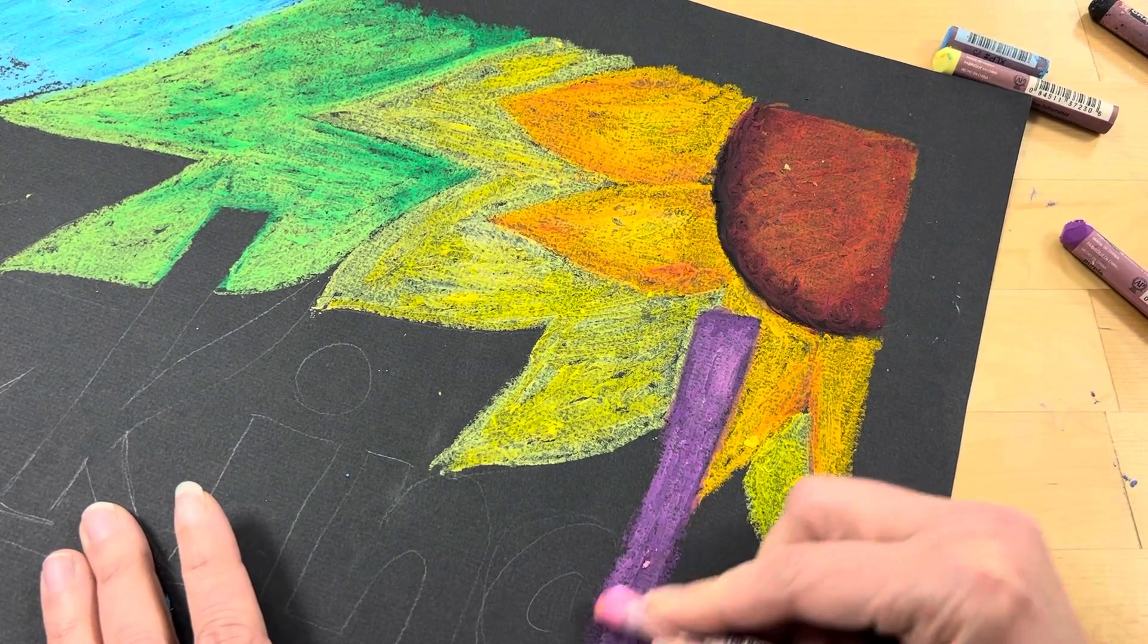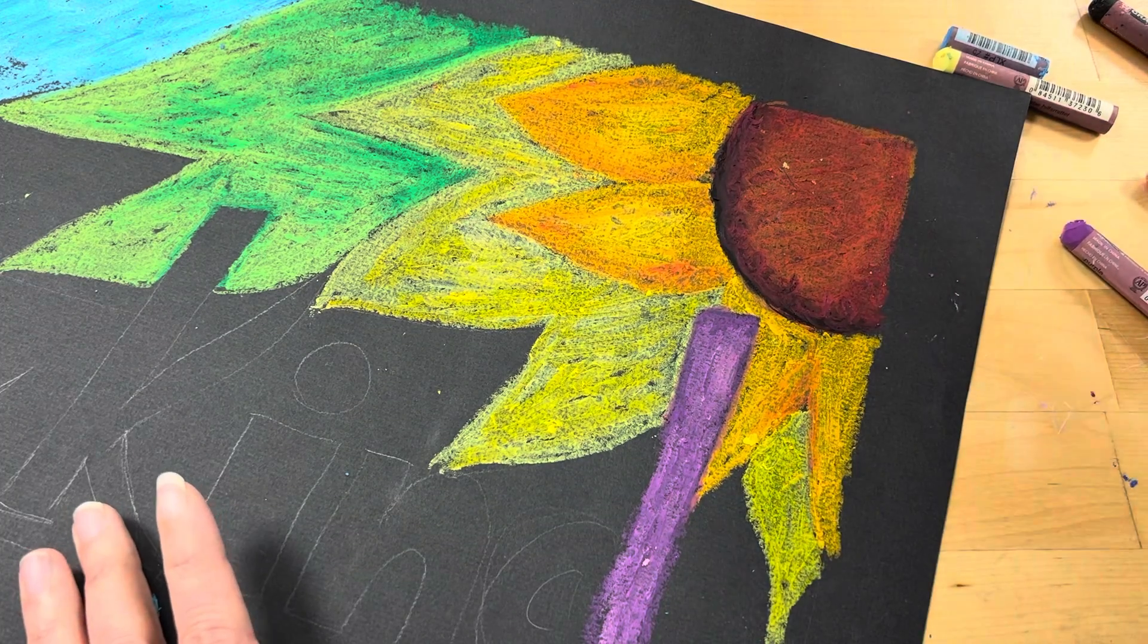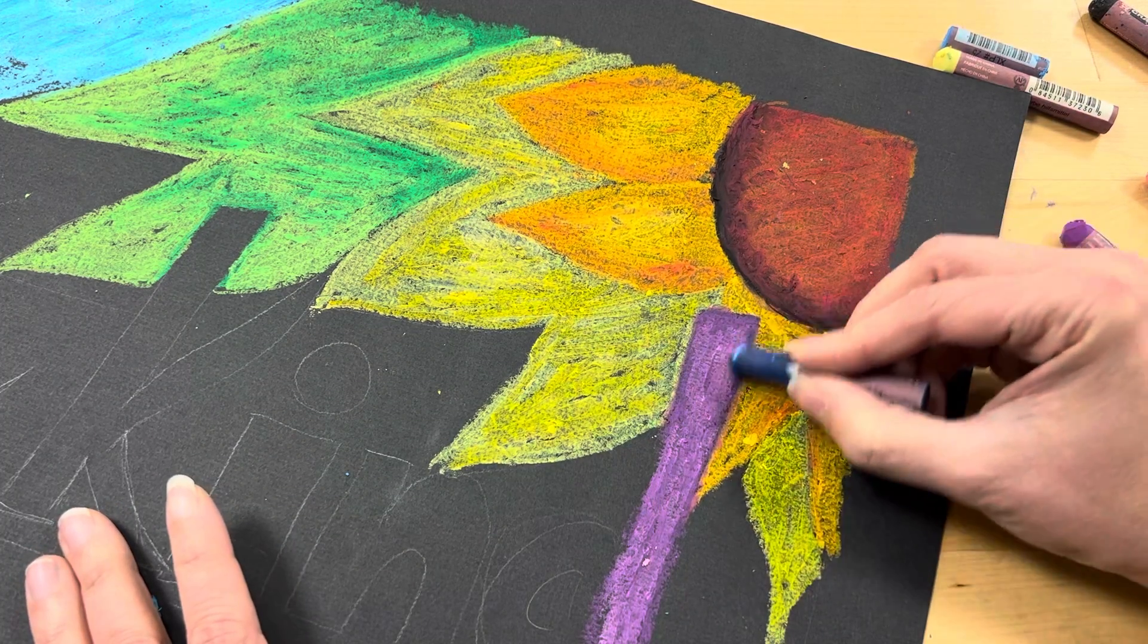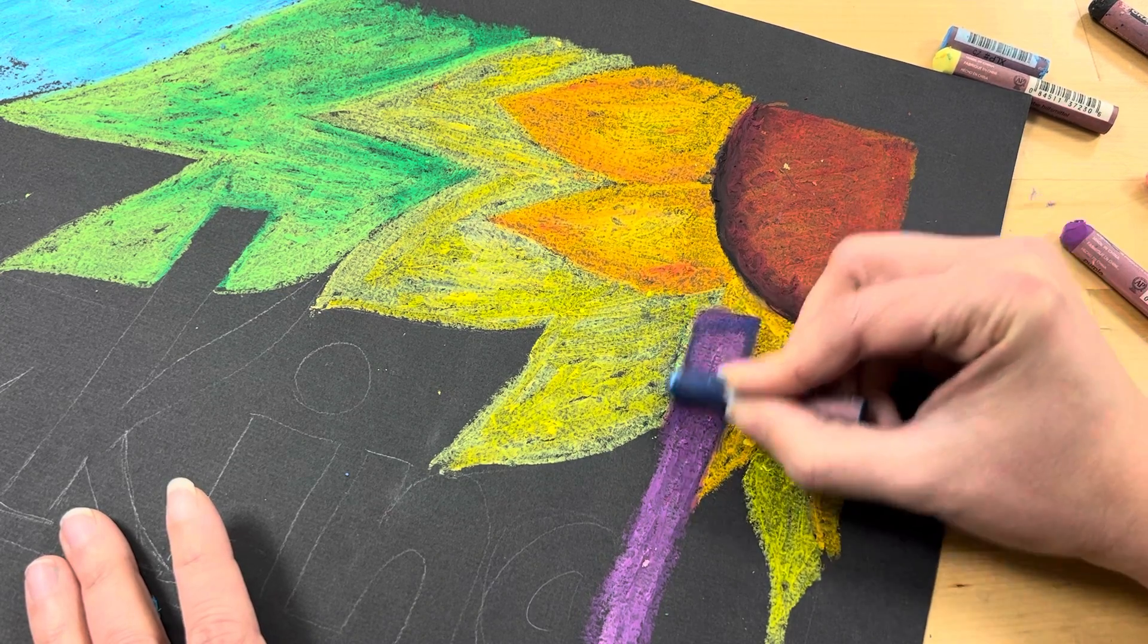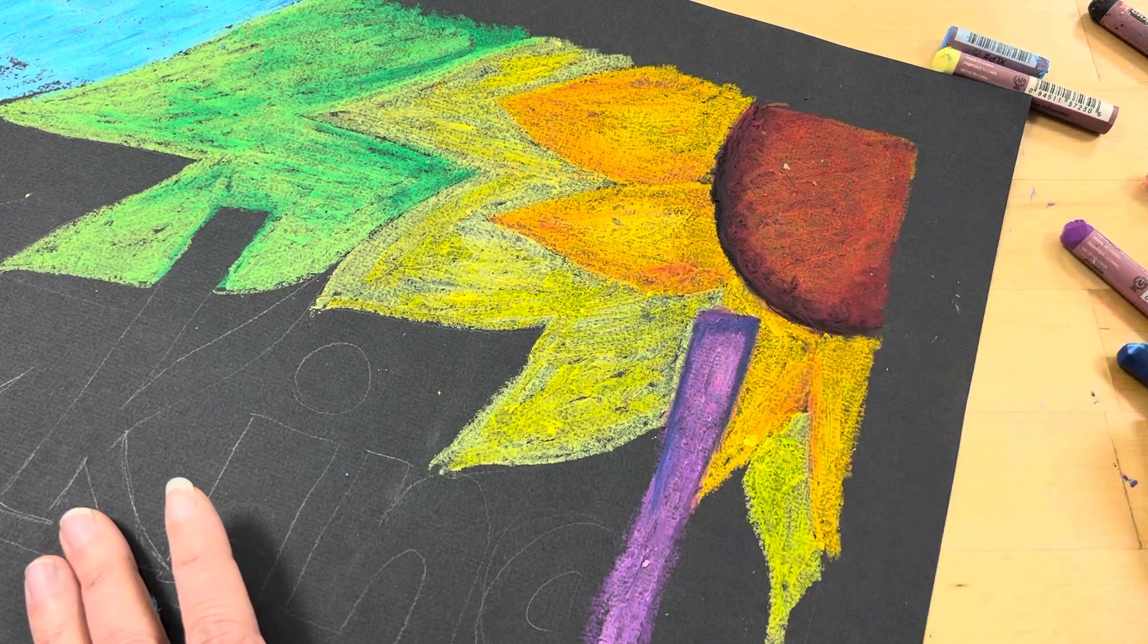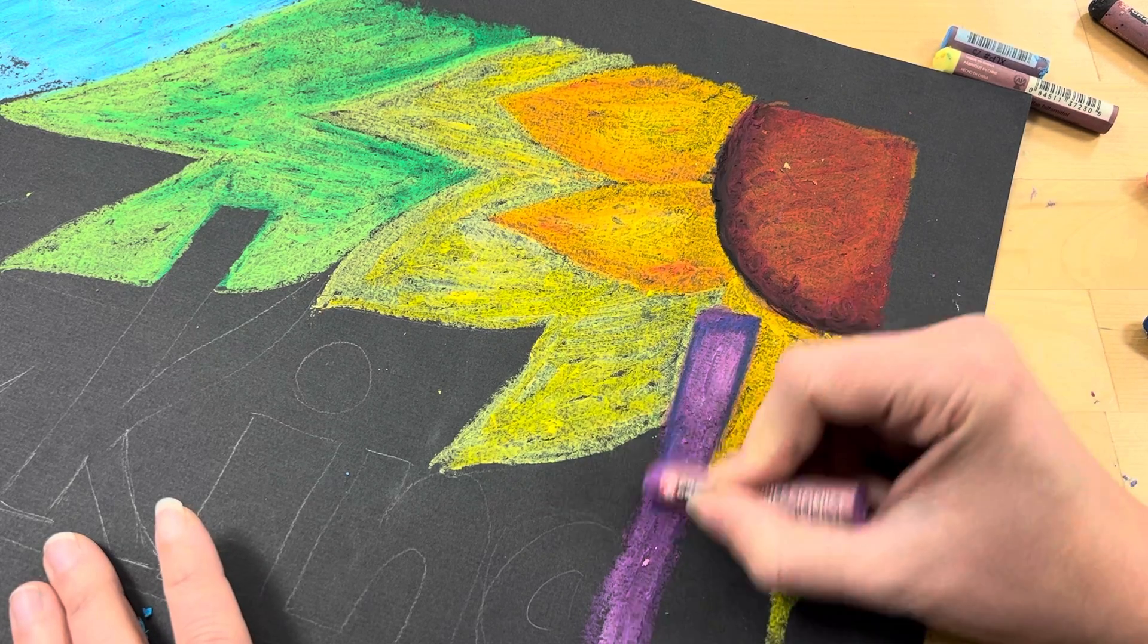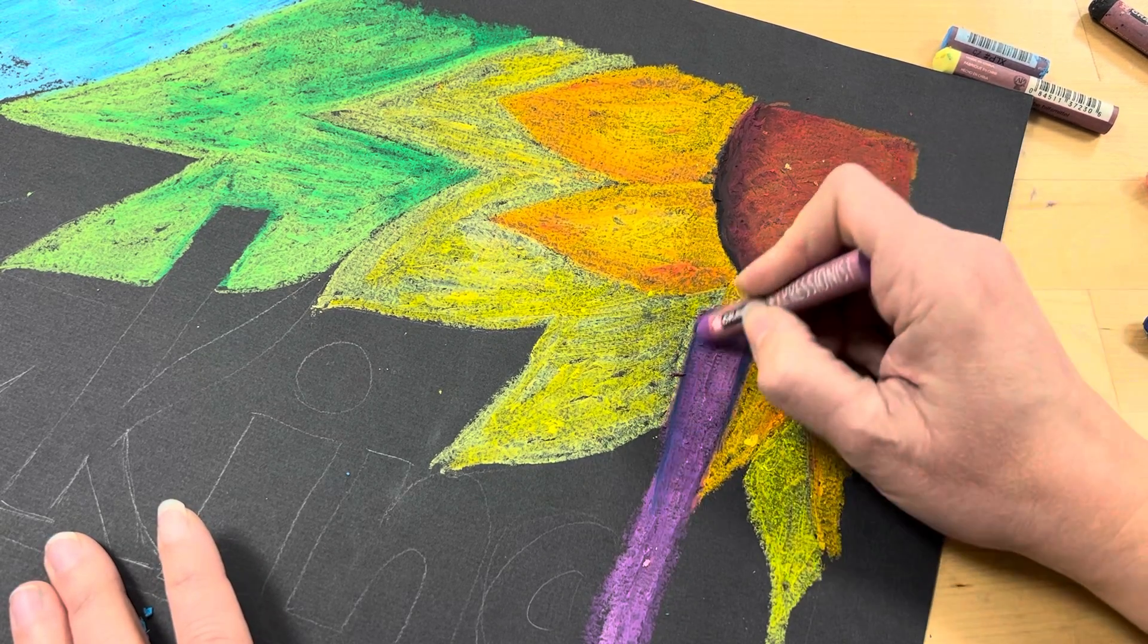I want my edges to be a little bit darker so I can use a color next to it on the color wheel. I'm going to use this dark blue. Dab that around the edges. And then I don't want it to stand out too much. So I'll go back over it with that purple.